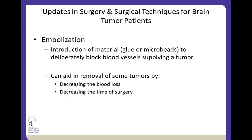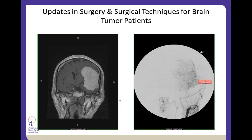Embolization is the introduction of materials such as glue or microbeads to deliberately block blood vessels supplying a tumor. This can aid in removal, decrease potential blood loss for very vascular tumors, and subsequently decrease surgery time. Here we have an example — a patient with a very large extra-axial, homogeneously enhancing mass on the left side of the brain, displacing the brain to the right and threatening critical blood vessels. This is radiographically consistent with a meningioma.